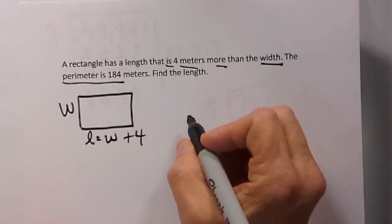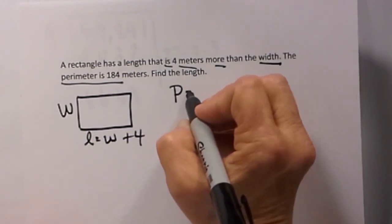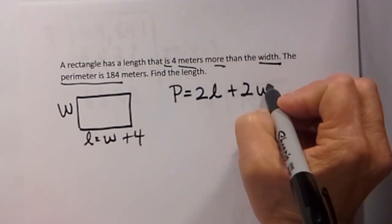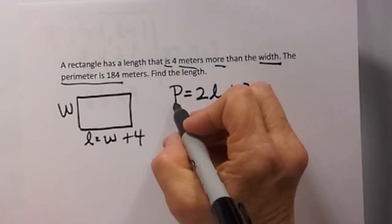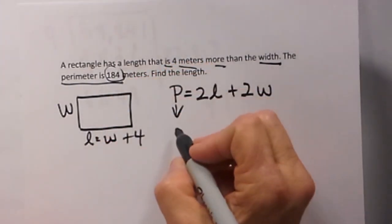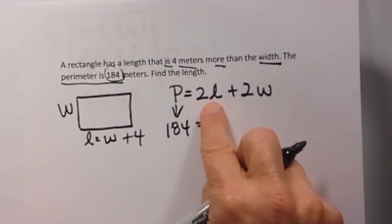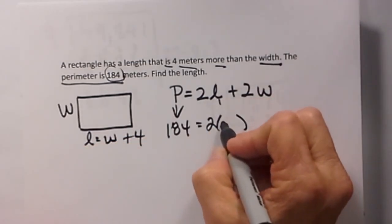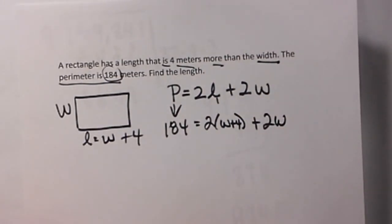And then the perimeter is 184. So let's go back. The first problem we did was a perimeter problem. To find the perimeter we take 2 times the length plus 2 times the width. That gives us our perimeter when you add all 4 sides up. Now let's plug in what we know. The perimeter is 184 meters. 2 times the length would be 2 times w plus 4. So for this L we are going to put in w plus 4 plus 2 widths. Now we just need to solve it.